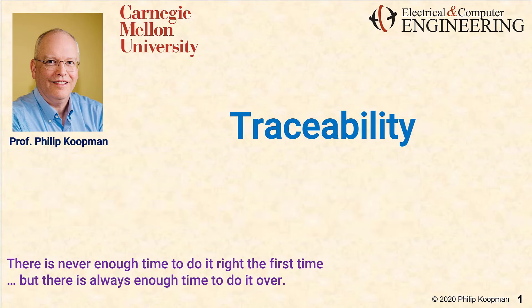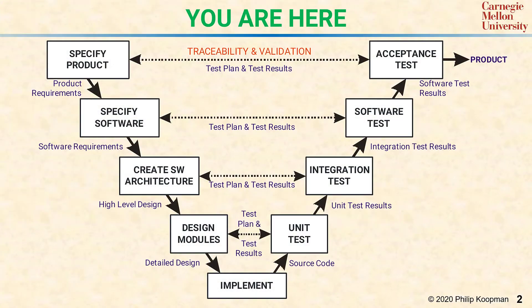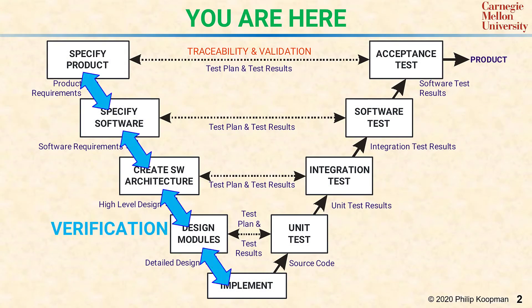This is Phil Kopman with a tutorial on traceability. Traceability pervades the V. There's verification, which means that adjacent boxes going up and down the V are connected to each other properly.